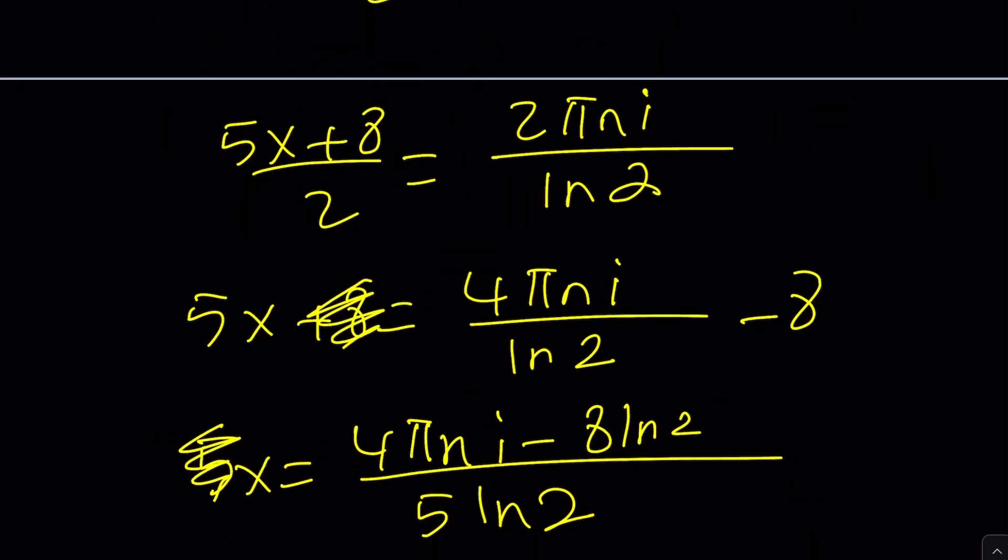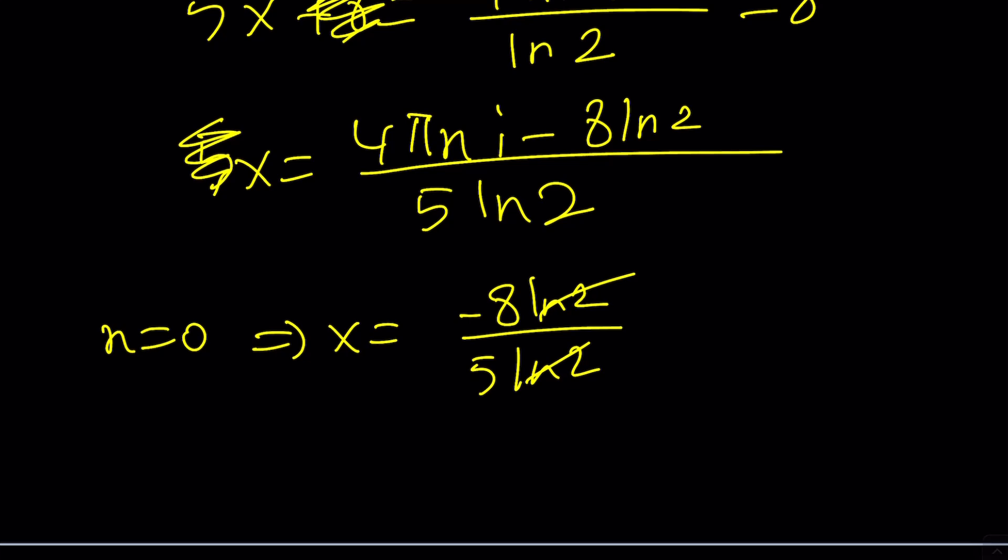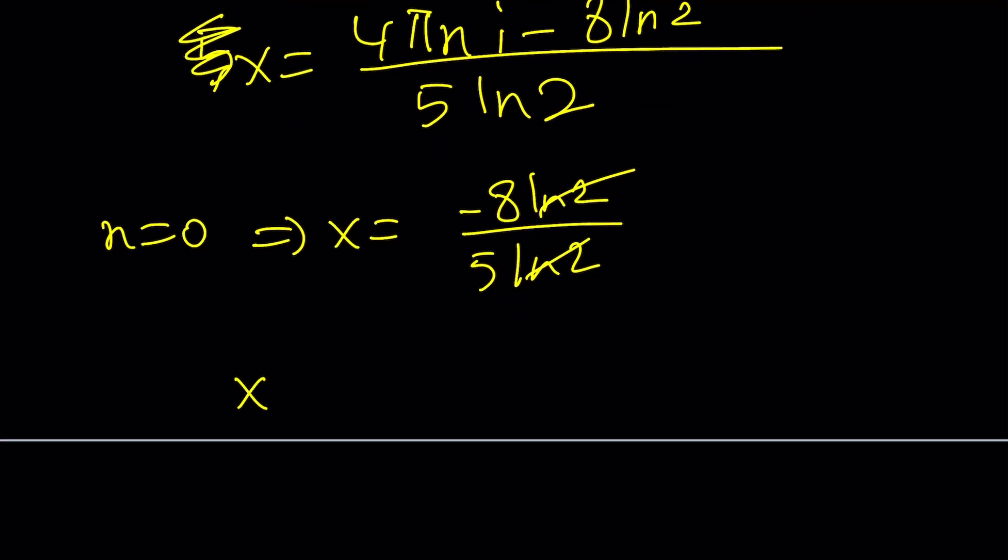But we're interested in a more general case, which is complex solutions. So that seems to be the solution. And obviously, you can write it in so many different ways. Like, you can separate the real part. So you can write it as negative 8 over 5, which is the real part, the real solution, plus 4 pi n over 5 ln 2 times i. Or some people will put the i before the imaginary part.